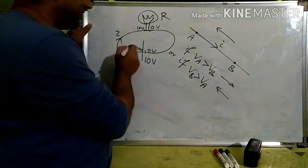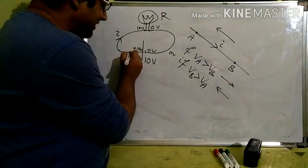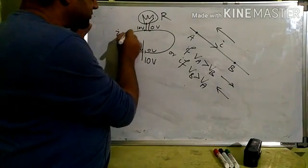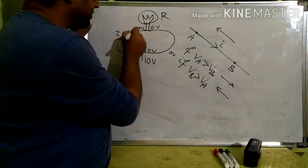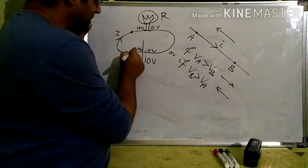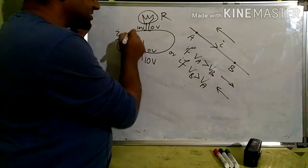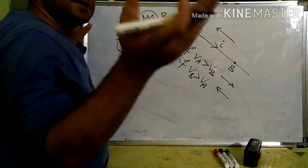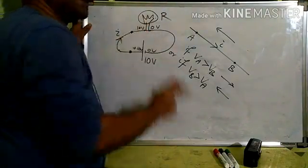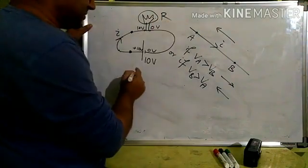Now here comes the doubt. Somebody asked: here it is 10 volt, here also 10 volt, till here 10 volt. Now let us take any two points — here also 10 volt, here also 10 volt — means the potential difference is 0. If potential difference is 0, how is current flowing? Now this type of question may be asked.